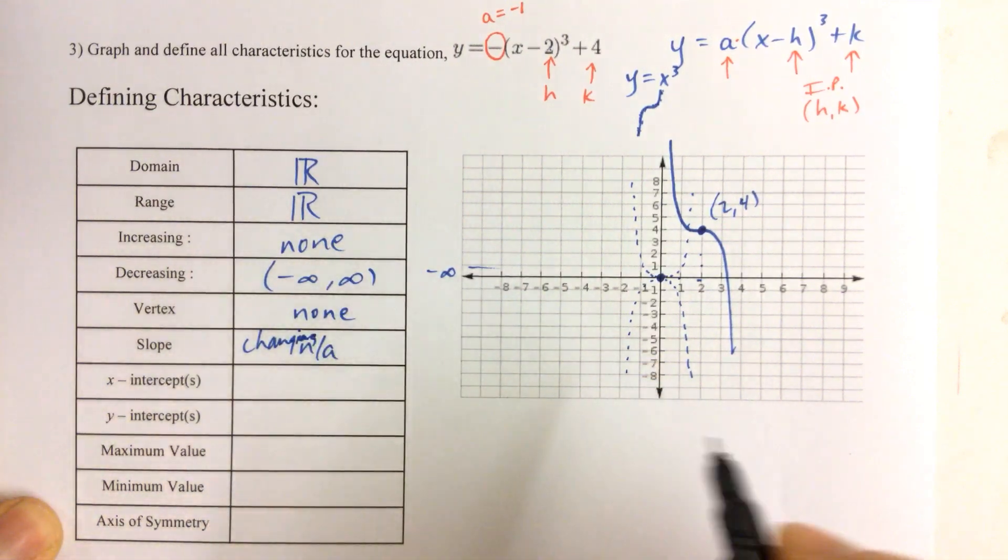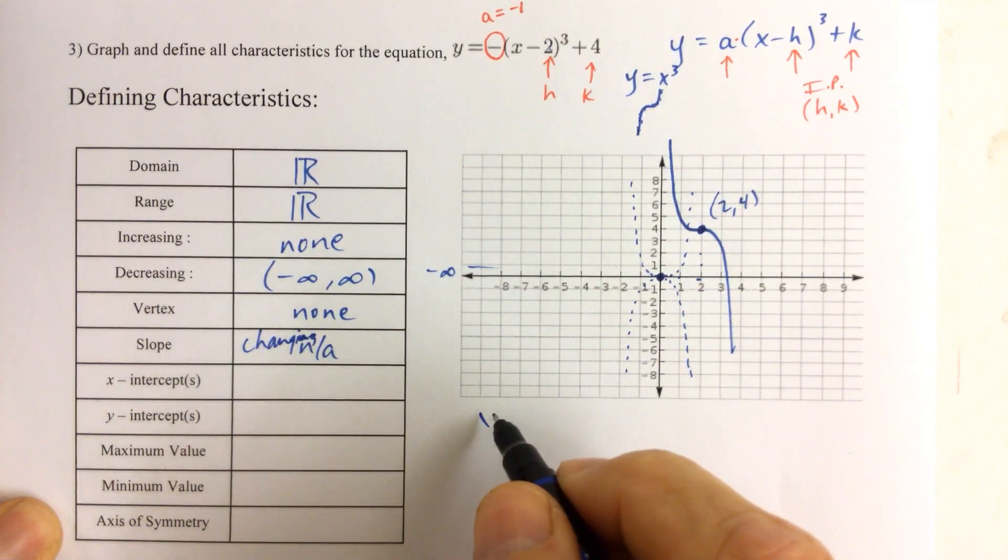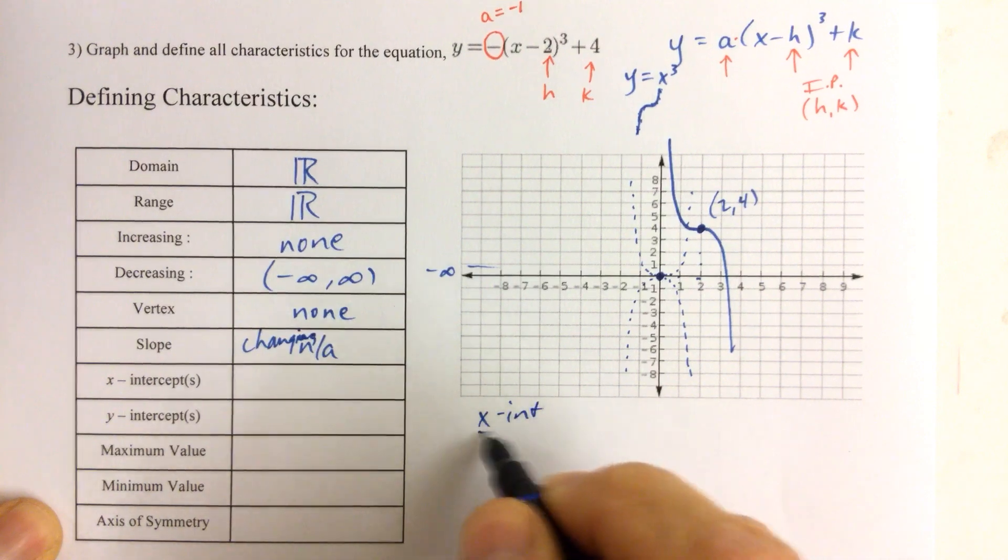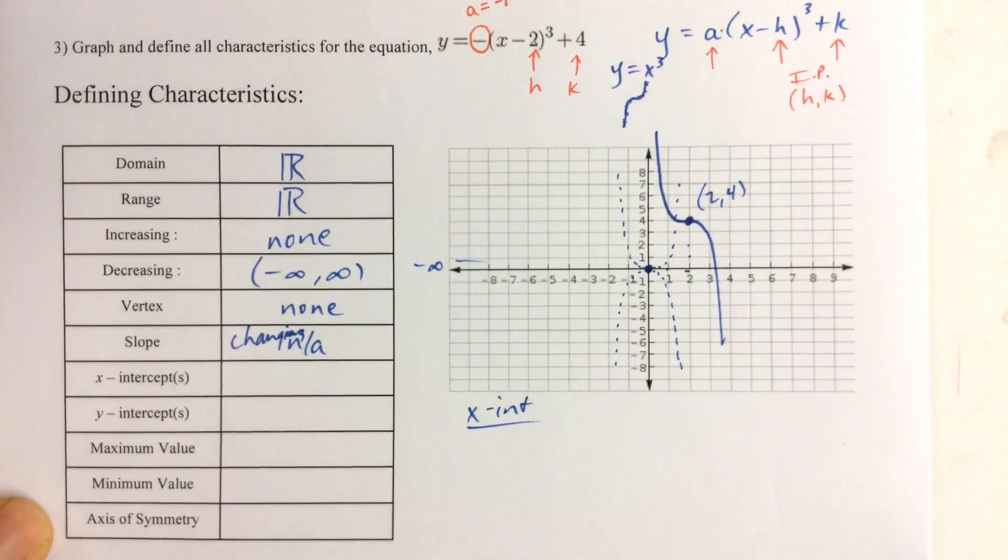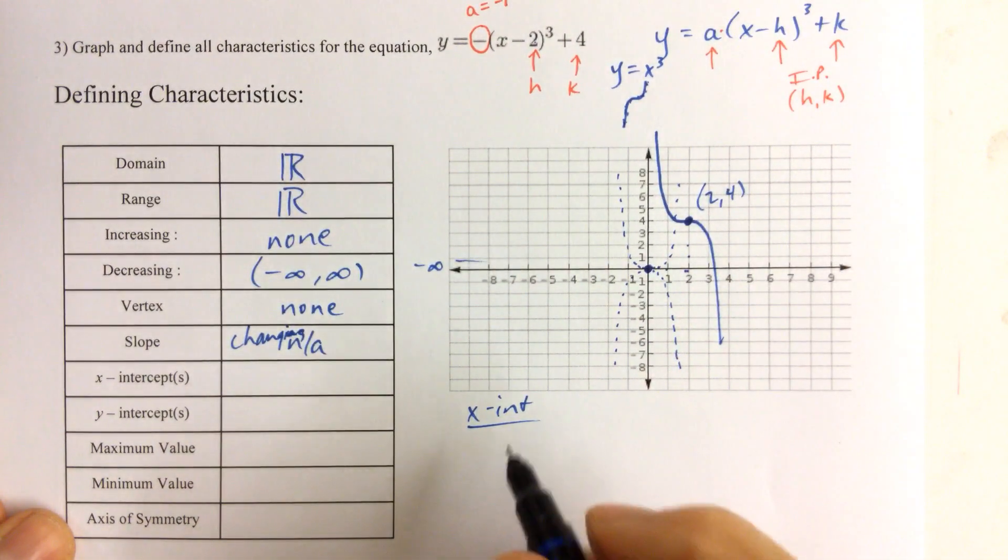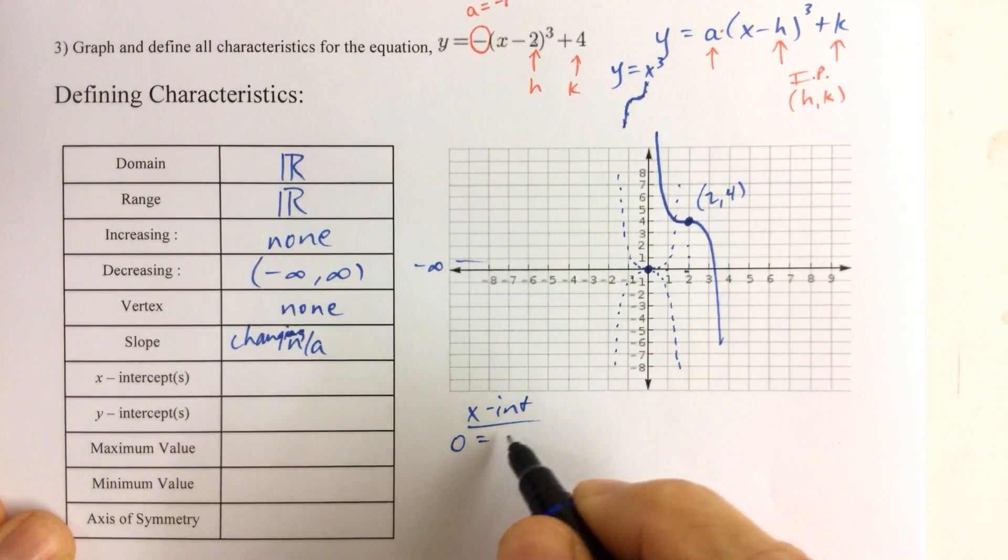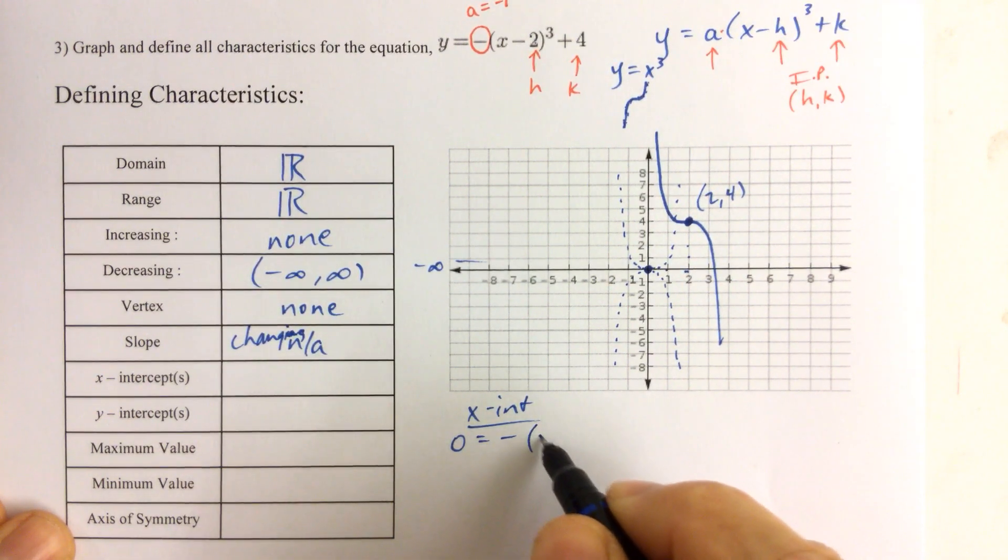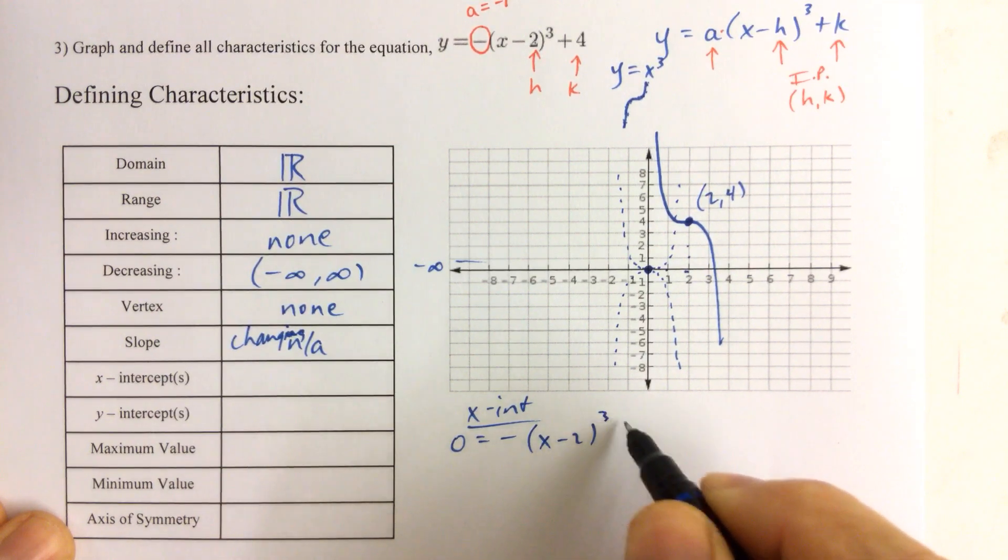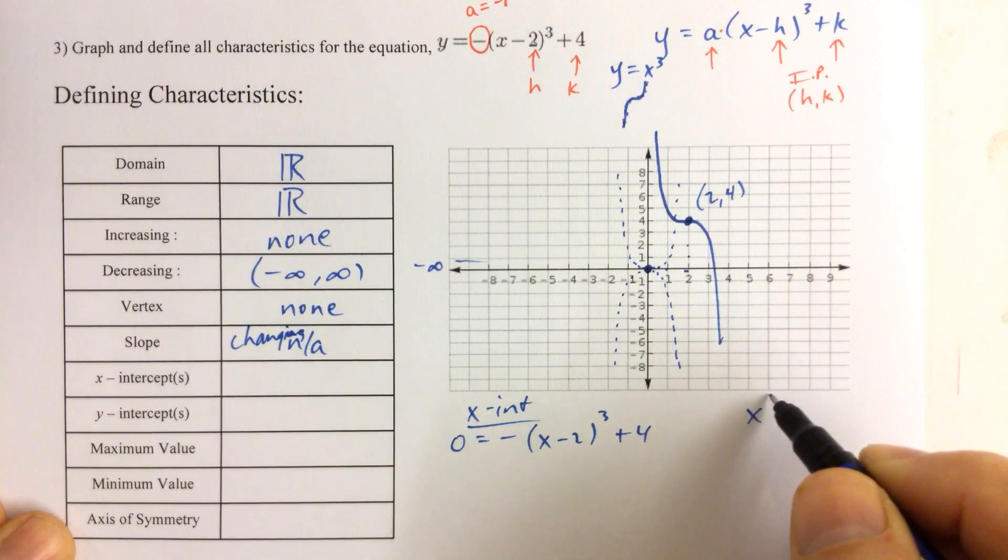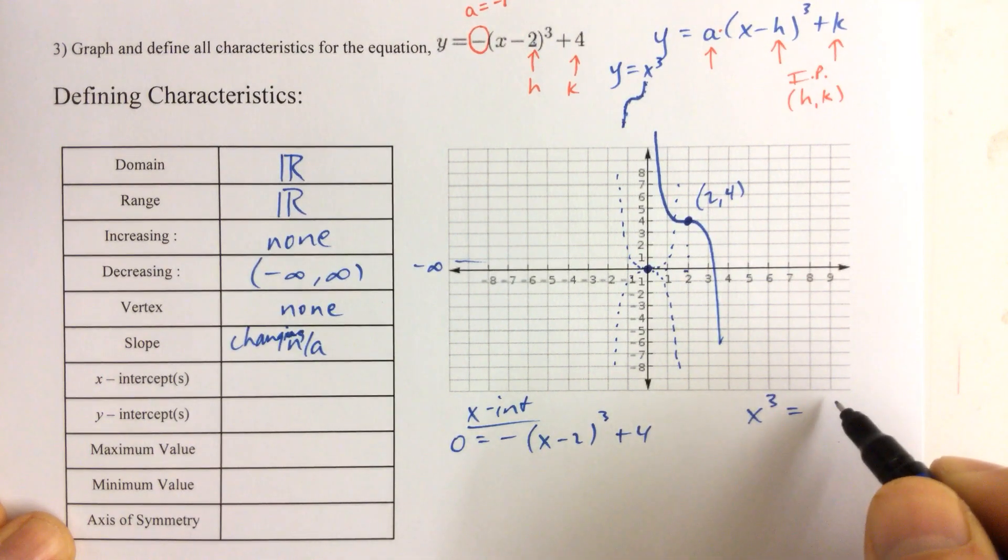The x-intercepts now, this is a good time for us to explore and remind ourselves, how do we solve an equation that has something cubed in it? Well, any time we're finding an x-intercept like we've done before, we let y equal zero. Then we get an equation that has something cubed plus something else.